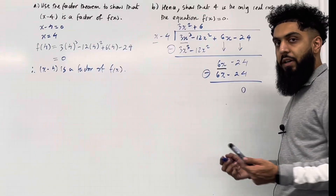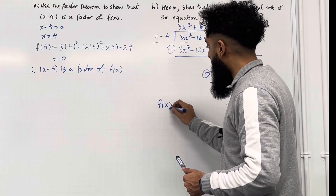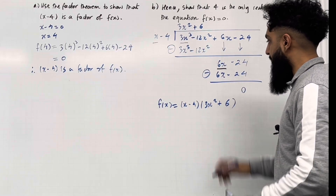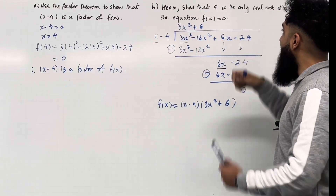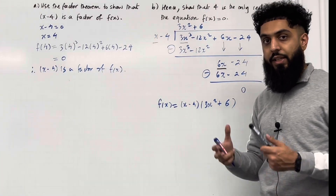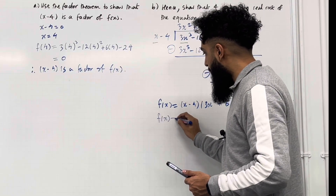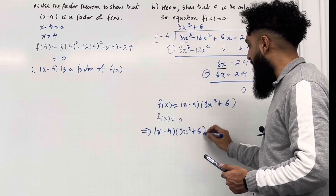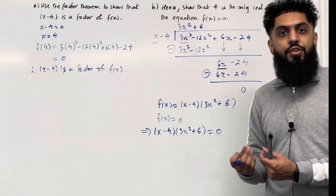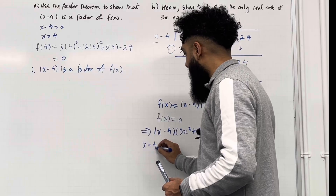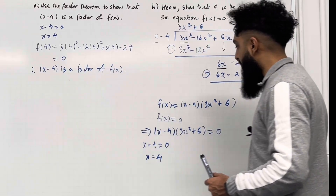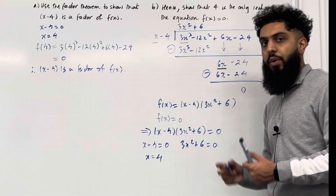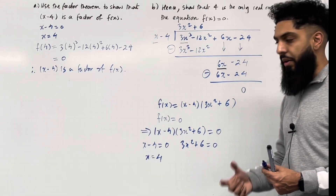The complete factorization of f(x) is therefore f(x) = (x − 4)(3x² + 6). Setting f(x) = 0 implies (x − 4)(3x² + 6) = 0. Setting each bracket equal to 0: x − 4 = 0 gives x = 4, and then 3x² + 6 = 0. We want to show this quadratic has no real roots, so we need to find its discriminant.